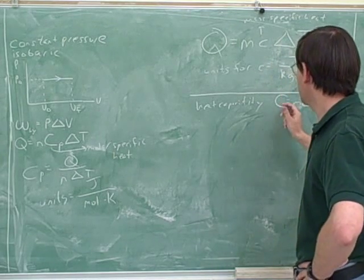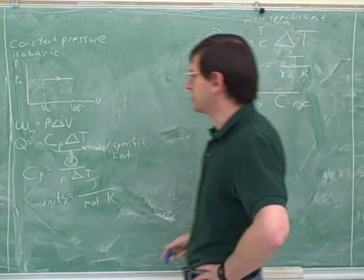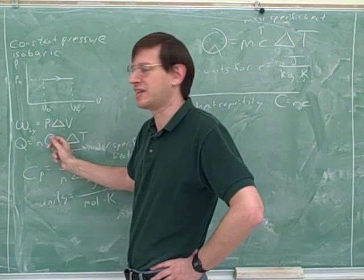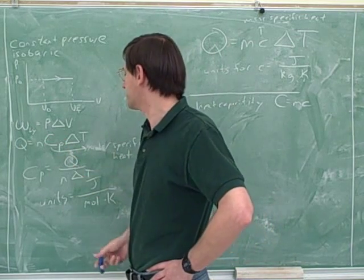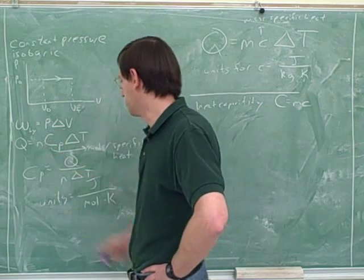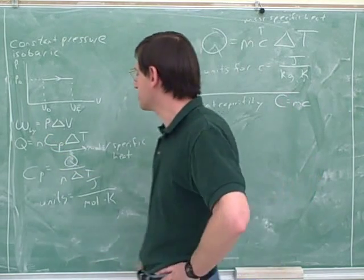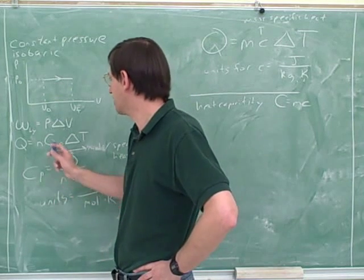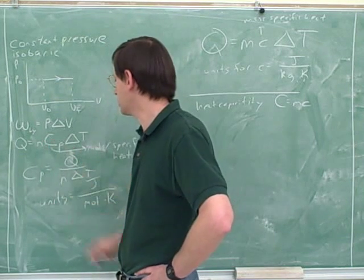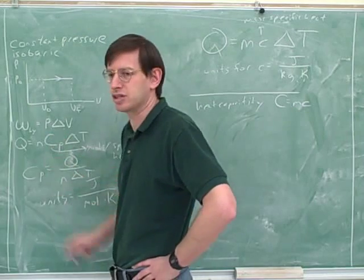Maybe that's a little confusing or unfortunate, though, because here we're using capital C for something else. This is not the heat capacity. This is the molar specific heat. So sometimes when people use a capital C, they're talking about the heat capacity, but sometimes when they use a capital C, they're talking about the molar specific heat. But you wouldn't usually use both of those in the same problem, so there shouldn't be too much confusion.